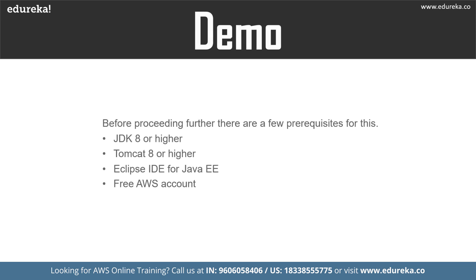Now we are going to see the demo. I will show you how to create a Java web application in Eclipse, first deploying it locally on Apache Tomcat, and then deploying that application on AWS. Before moving to the demo, there are a few prerequisites: JDK 8 or higher, Tomcat 8 or higher, the Eclipse IDE, and a free AWS account.